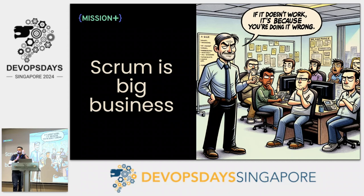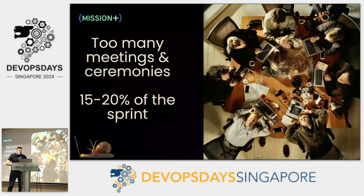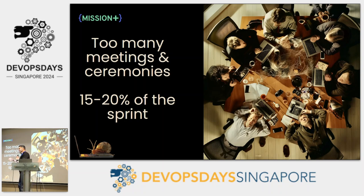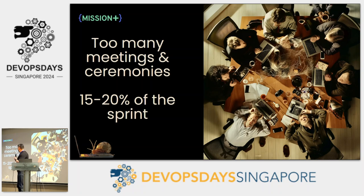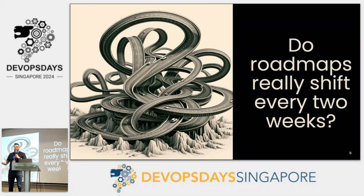So what is it about scrum? Scrum is big business — some might say it's gotten a little religious in nature. There's planning poker, agile coaches, and if you complain it doesn't work for you, you're told you're doing it wrong. We've been doing this for over 20 years — if we can't get it right by now, maybe the critics have a point. Argument number one: way too many meetings and ceremonies. Following a proper scrum process, you're probably spending about 20% of a sprint in ceremonies. It's also very inward-looking — how much of scrum is spent talking to real users getting real feedback? Probably zero.